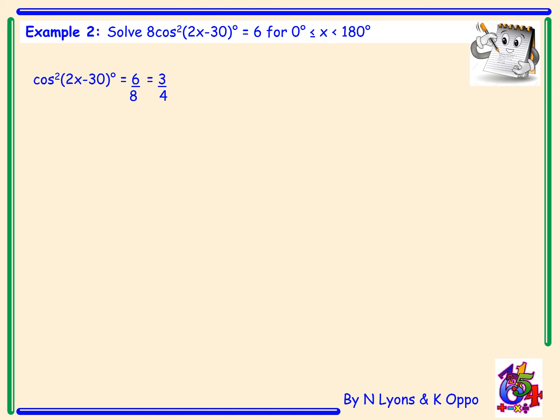We also need to square root because we have cos²(2x − 30), so we square root both sides and again get root 3 over 4. When we square root we get a plus and a minus answer, and root 3 over 4 can be simplified down to root 3 over 2.